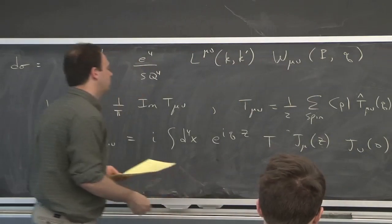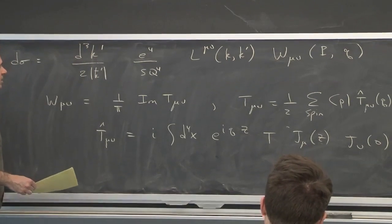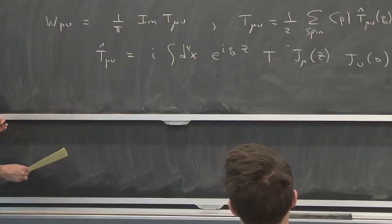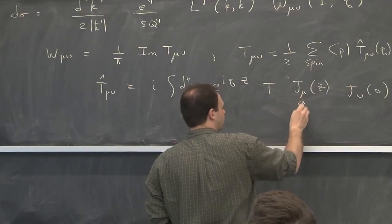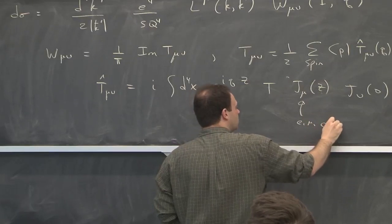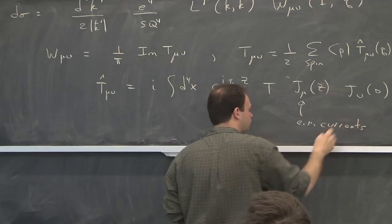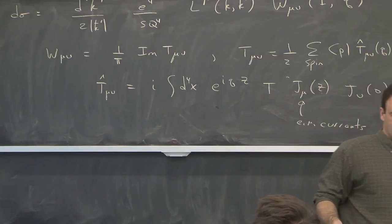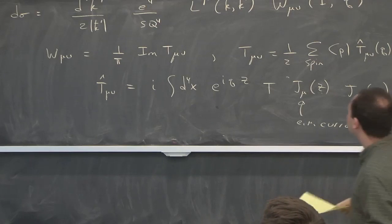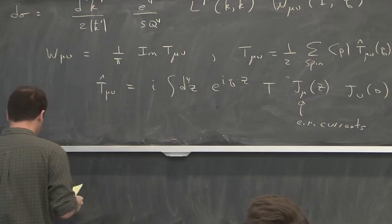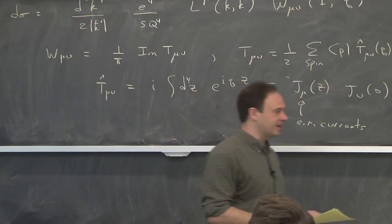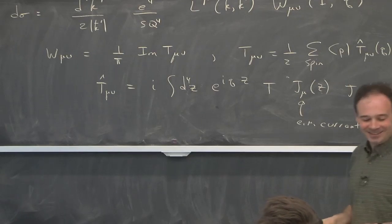We've just worked all orders and basically we use the optical theorem. So T is the time order product of the two currents. Let me call this Z. So that's, before you start doing anything in QCD, that's how you could write this, and these are the electromagnetic currents for a quark.